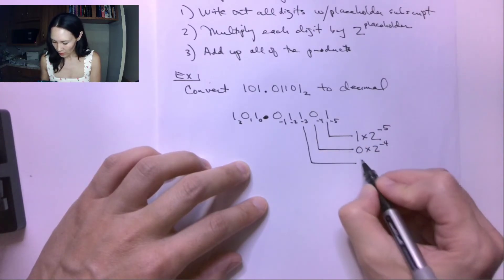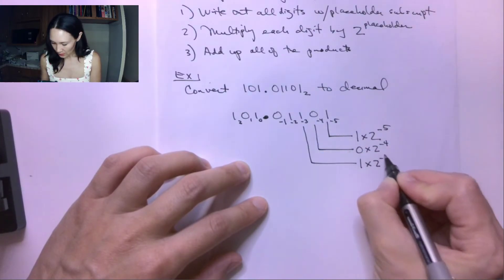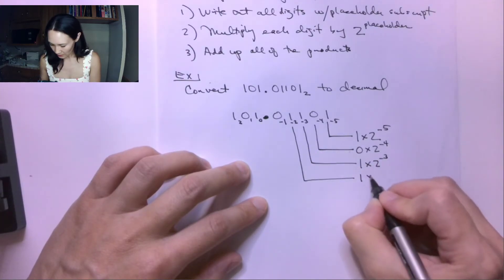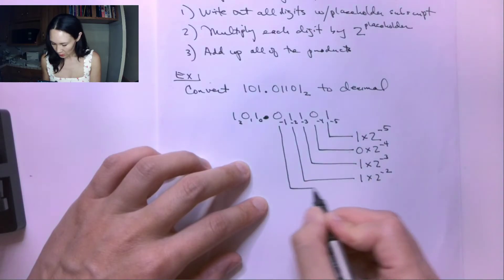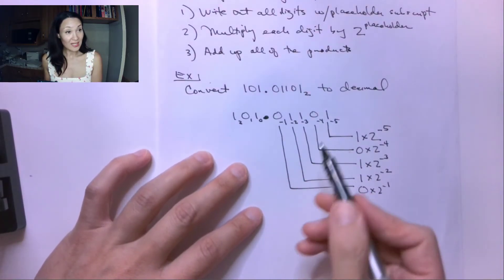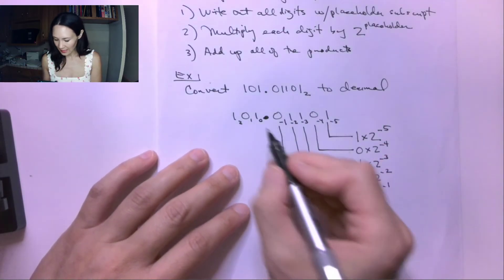The next digit is 1, 1 times 2 to the negative 3. The next digit is 1, 1 times 2 to the negative 2. The next digit is 0, 0 times 2 to the negative 1. And we're just going to continue on past the decimal point.